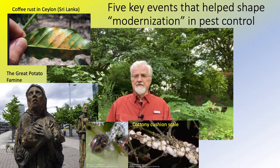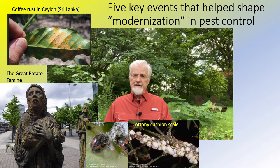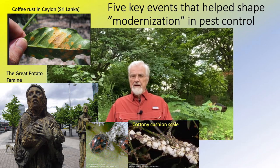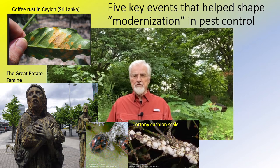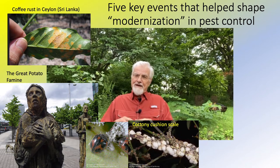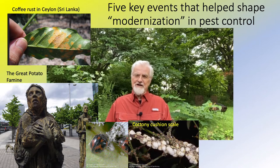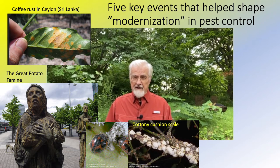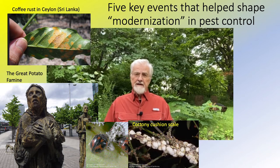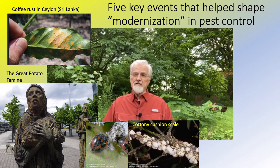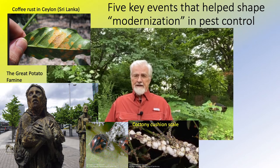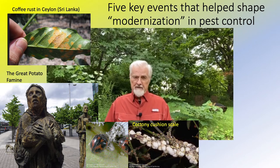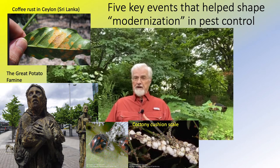The next example is from California, where accidentally a scale insect—the cottony cushion scale—was introduced from Australia and had a devastating impact on the citrus industry. In what would become a classic way of dealing with pests, entomologists went to Australia and figured out what controlled the cottony cushion scale there. It turned out there was a beetle called the Vedalia beetle that was a major predator, and they brought it back to California, where it proved to be a relatively effective control agent for that particular pest.